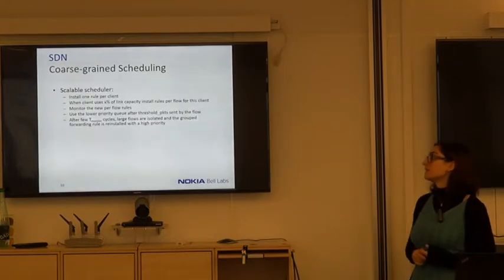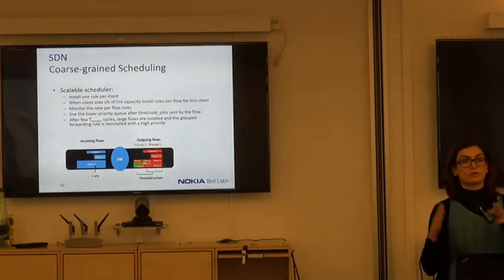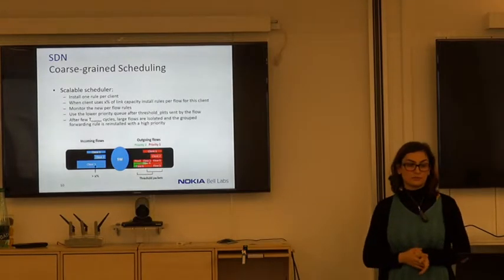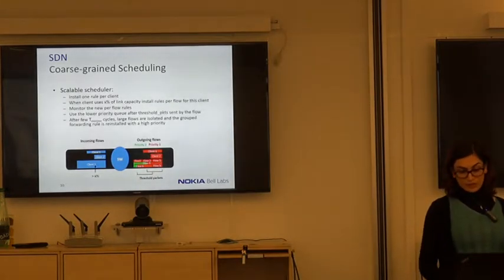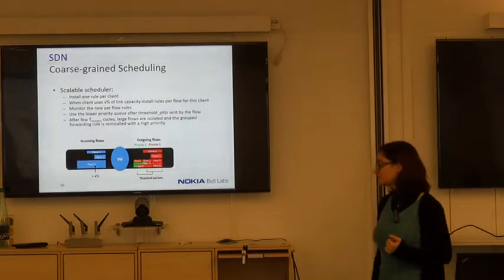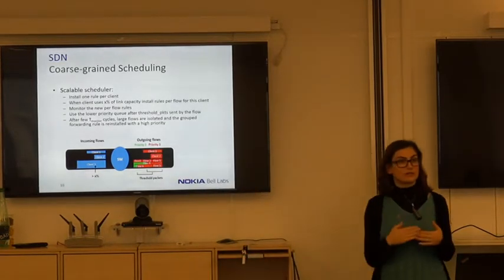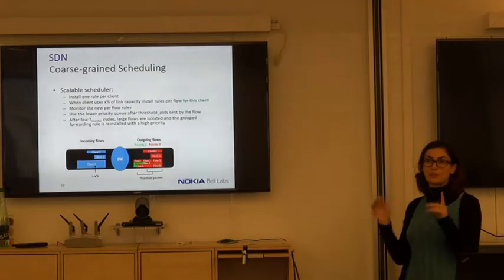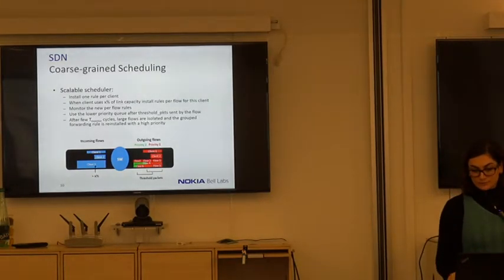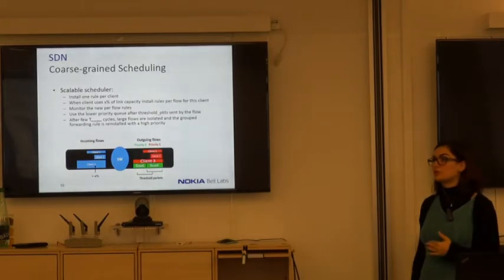We devised another approach called the scalable scheduler. We consider clients rather than single flows — a client could be a company, a subset of a network, or a network application; it's up to the network provider to define it. When a certain client bypasses an X percent threshold of link utilization, the controller zooms in on its traffic to see how many different flows it has, and implements the stateful scheduler. If a flow has sent more than X packets, it's considered a long flow and its priority changes. Then we zoom out again to install aggregated rules, minimizing the number of rules installed.